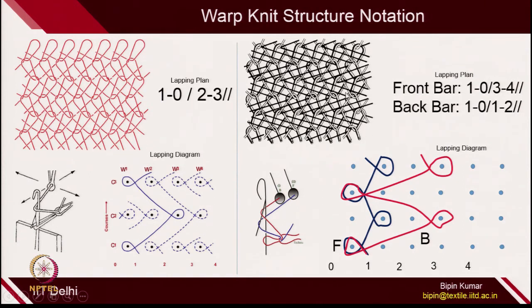The same thing applies in double bar notation. Here 2 sets of bars are used — you can see the black yarn and white yarn — so for each bar you have to give its lapping plan and lapping diagram. For 3-bar notation, you need 3 lapping plans and 3 lapping diagrams. Similarly for 4, 5, or 6 bars, you need to give different lapping notation and lapping plans. For 2-bed designs, in the same sequence you can give the movement of lapping plan and lapping diagram for each guide bar as it shifts from one needle bed to the other.